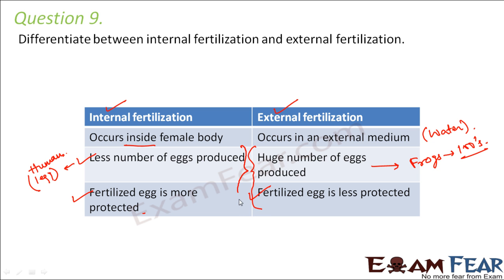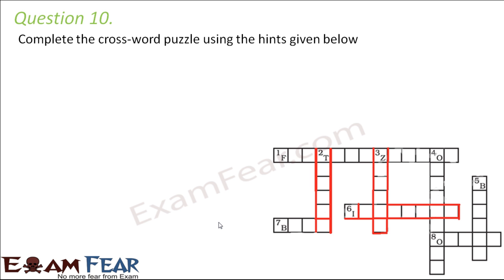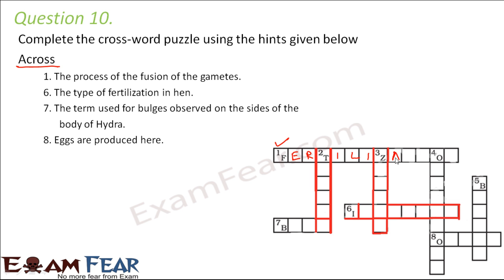Question number ten: we have a crossword to complete. Across, hint number one: the process of fusion of gametes — the male gamete and female gamete fuse together. That process, starting with F, is fertilization.